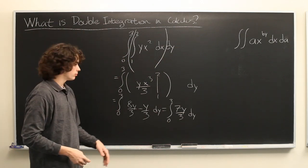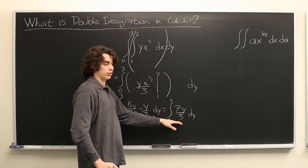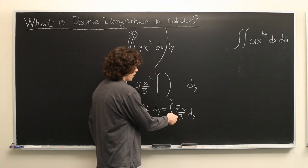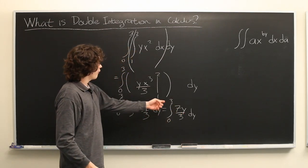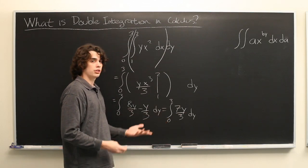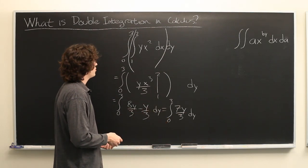Well, from here it's simple. This is just a single variable integral. All we need to do is find the antiderivative of this function with respect to y, evaluate it at three and zero and subtract accordingly. Easy enough.